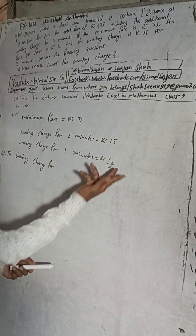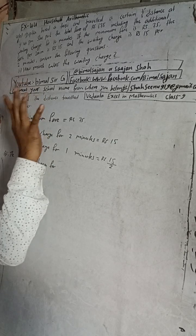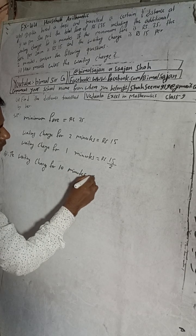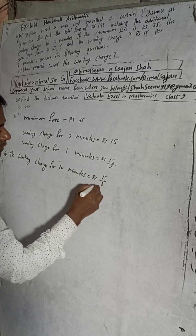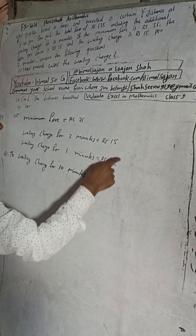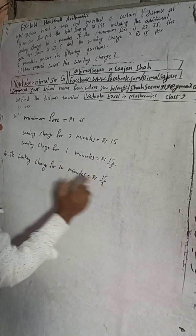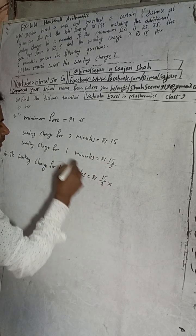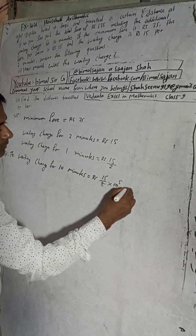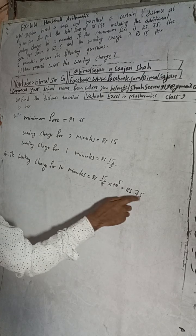For 1 minute the waiting charge is Rs 7.5. Now for 10 minutes: time increases from 1 minute to 10 minutes, so charge increases — for increase, we multiply. Multiply by 10: 7.5 × 10 = Rs 75. Therefore, the waiting charge for 10 minutes is Rs 75.